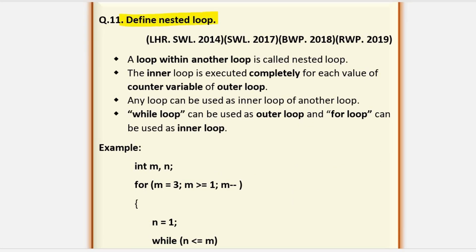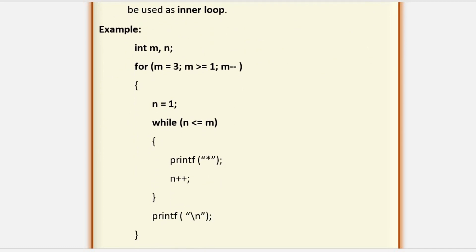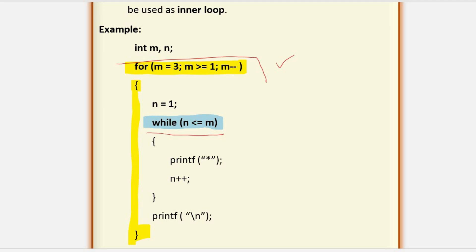Define nested loop. Using one loop inside another loop is called a nested loop — a loop within another loop. For example, here is a for loop whose body contains a while loop. The outer loop is the for loop and the inner loop is the while loop inside the outer loop's body. It is important to clarify that the outer loop can be any type — for loop, while loop, or do-while loop — and inside it you can use any other loop. Any combination is valid.